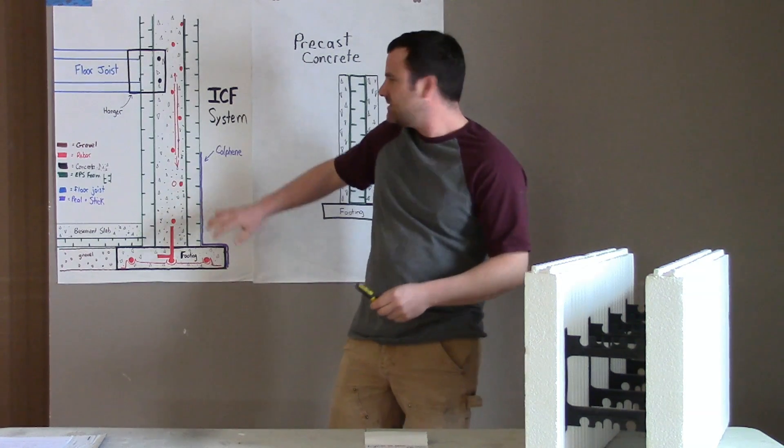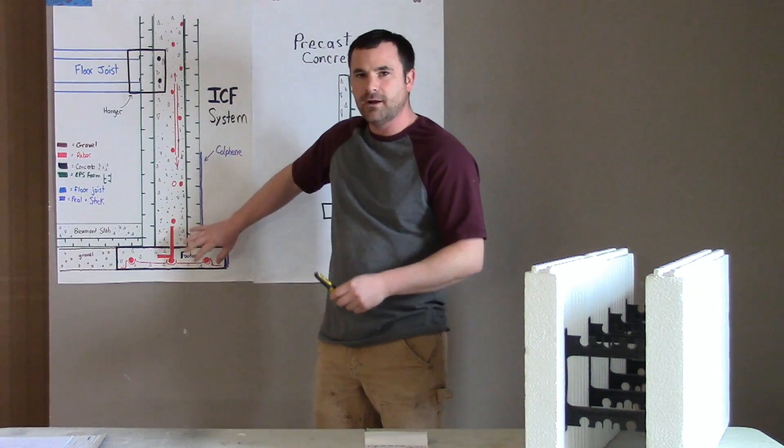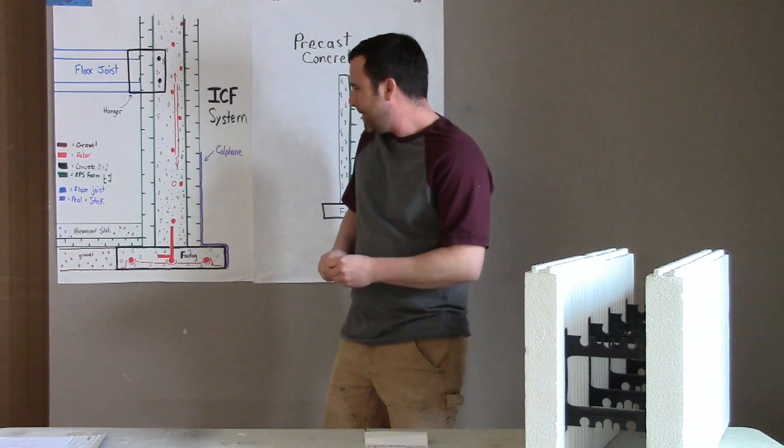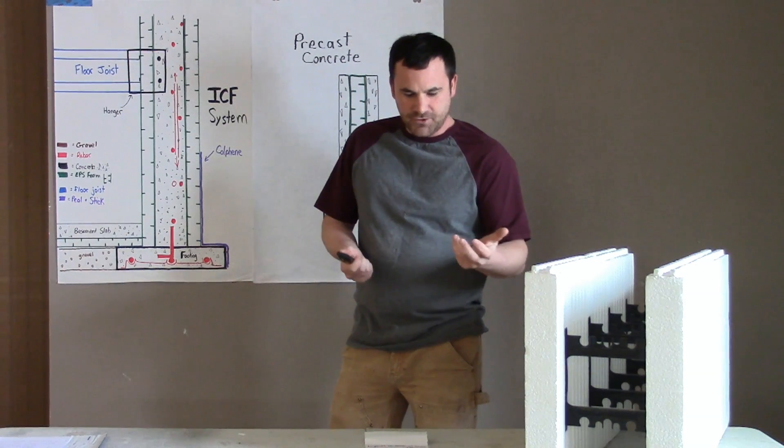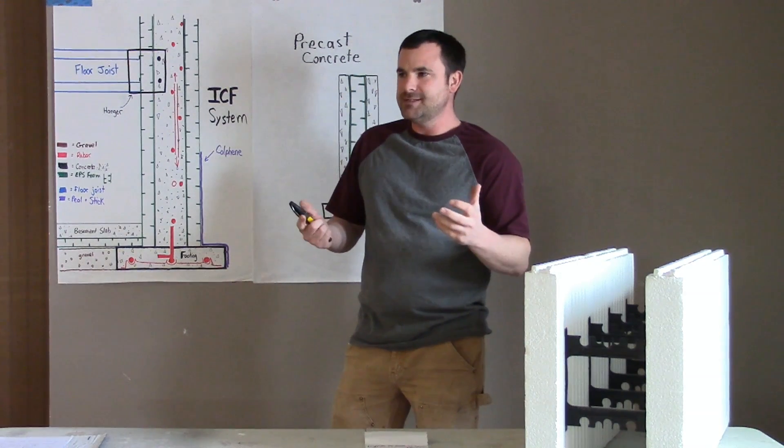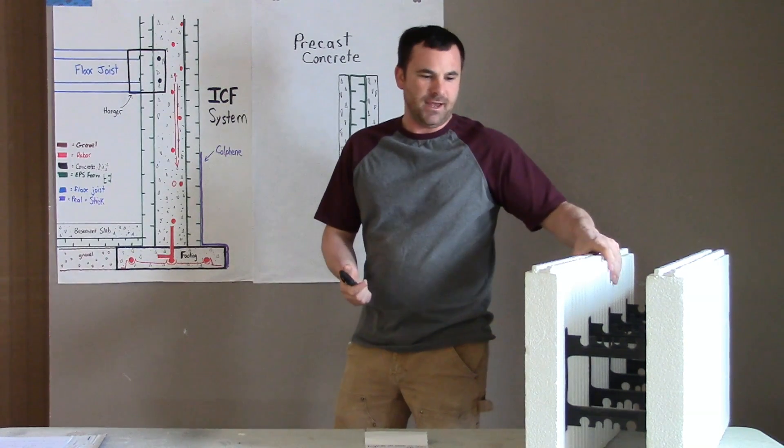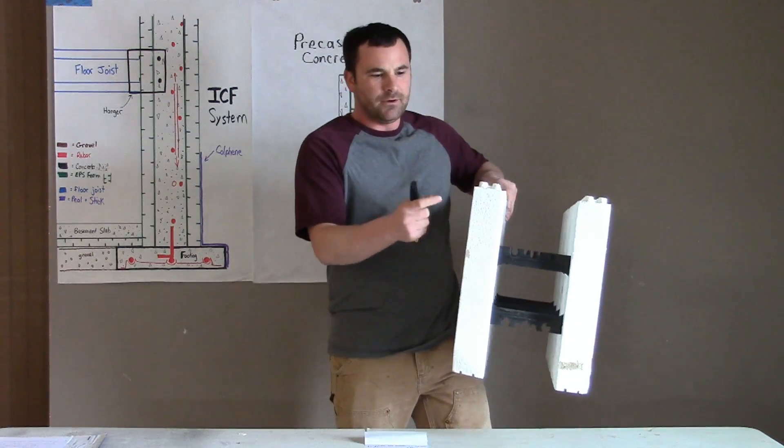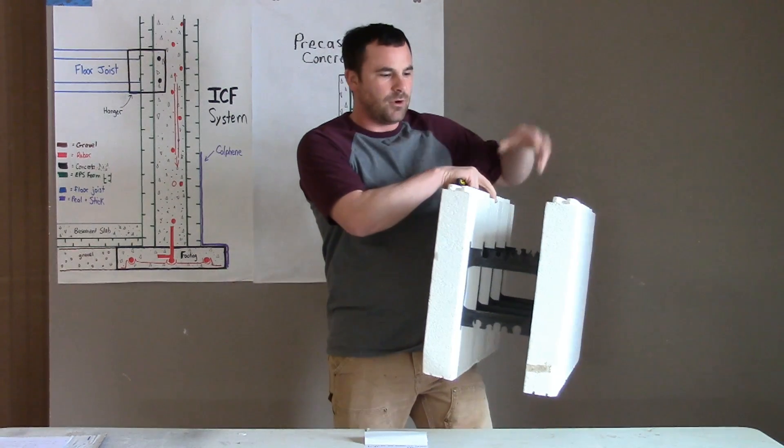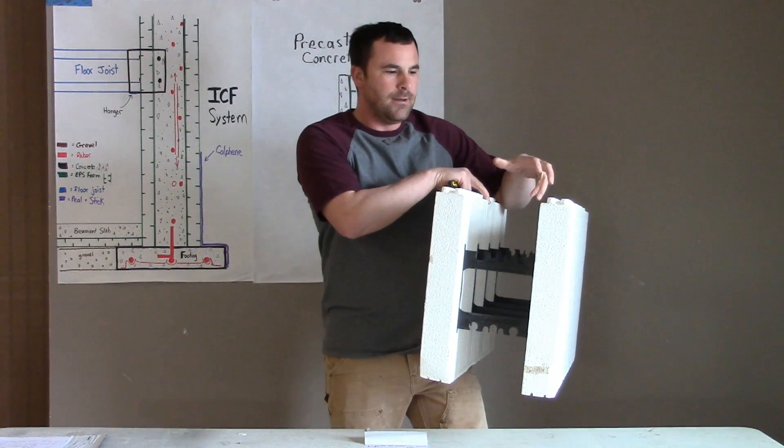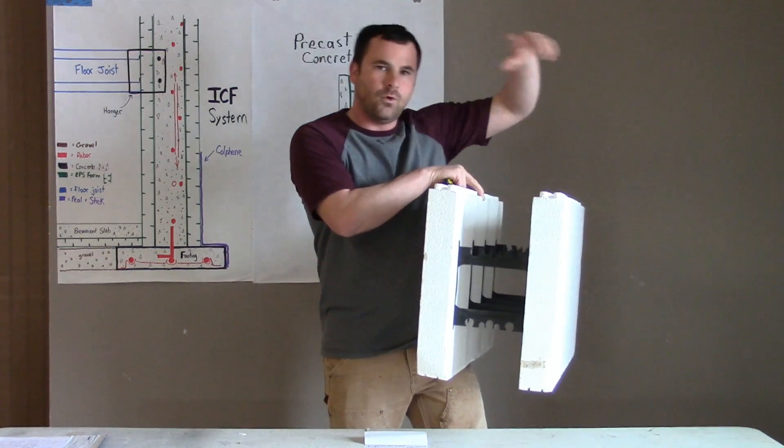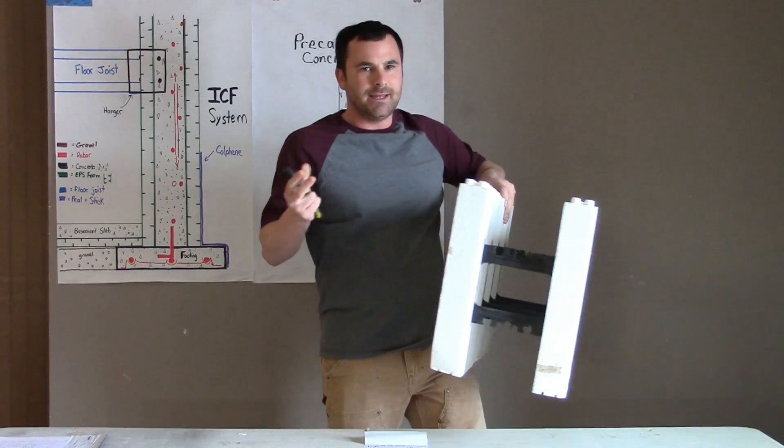An ICF system is monolithic. You have these blocks, stack them up - there's foam on either side, you pour concrete in the middle. The concrete you pour for the whole building, everything's tied together, so it's one unit.